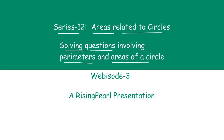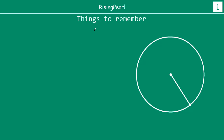Now before we take a look at the questions, we want to make sure that there are two very important things that we will want to remember. These are things we have seen in webisode number 1 and webisode number 2. So here we have drawn ourselves a circle and conventionally we mark the center of a circle as the letter O. I have taken randomly any point, let's call it A, on the circle. If I join the center and that point, this is the radius.